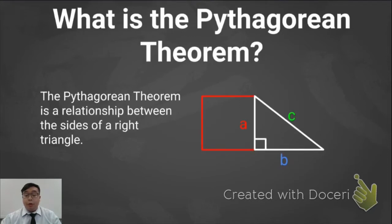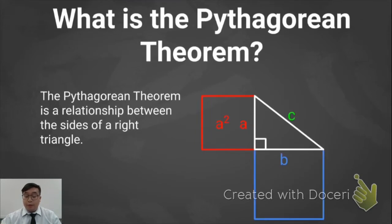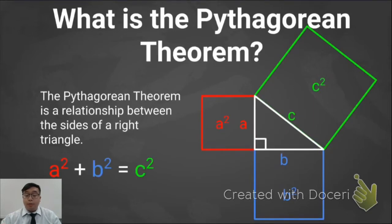If I drew a square off side A, its area would be A times itself, or A squared. If I drew a square off side B, its area would be B squared, and if I drew a square off side C, its area would be C squared. The Pythagorean Theorem says that the two smaller squares add up to the bigger square, or A squared plus B squared equals C squared.